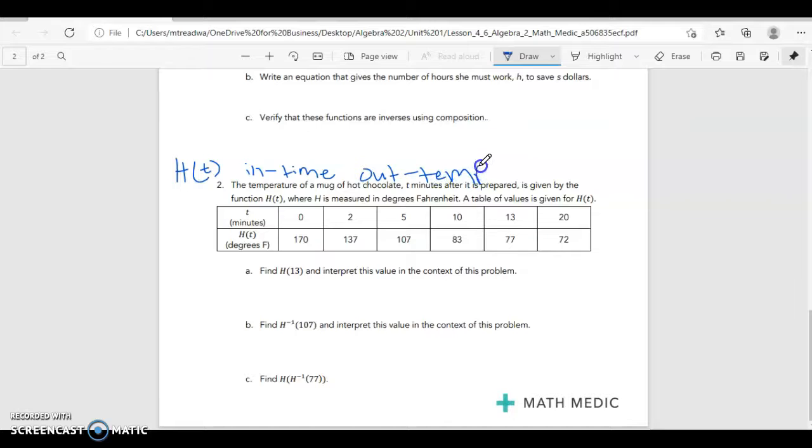So for part A, if I want to find H of 13, my input here, this is my initial function, my input, that 13 is time. So I'm looking for when time is 13, my output is temperature, my output is 77.